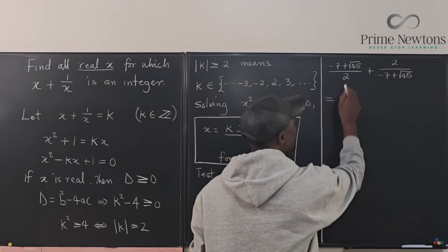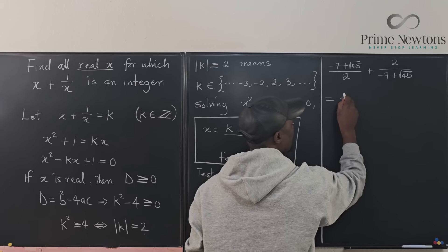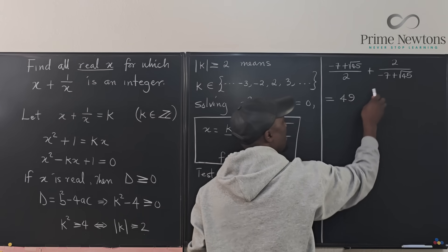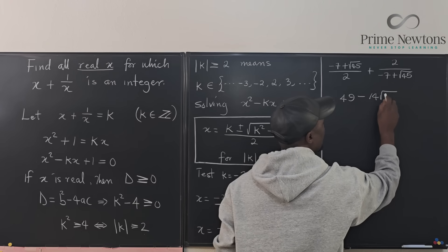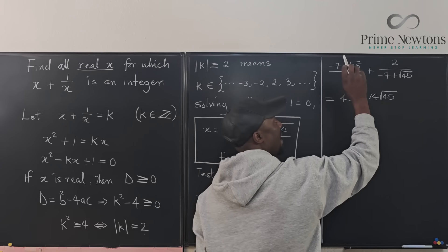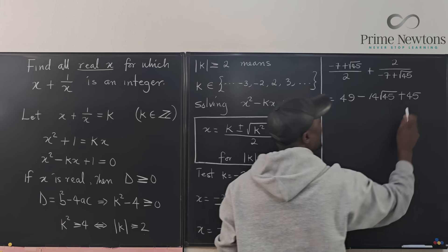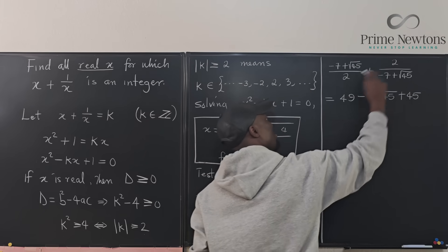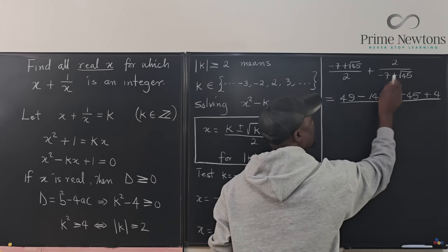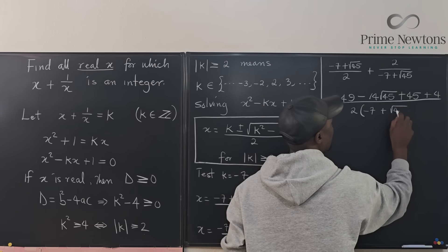So this is going to be, if I multiply this by this, I'm going to have negative 7 times negative 7 gives me 49. Then negative 7 times this, then this times this, I'm going to end up with negative 14 rad 45. And then I'm going to have this times this is going to give me plus 45. That's this multiplication. Then I'm going to do this. That's going to be plus 4. And I'm going to divide by the product of this 2, which is 2 times negative 7 plus the square root of 45.